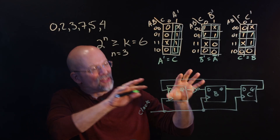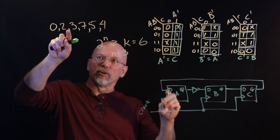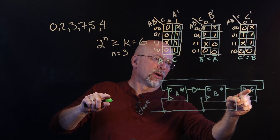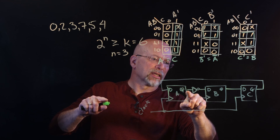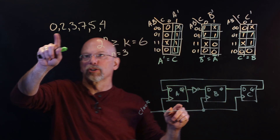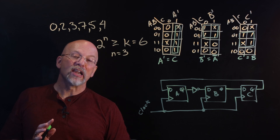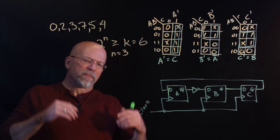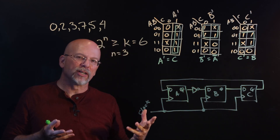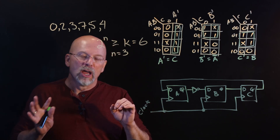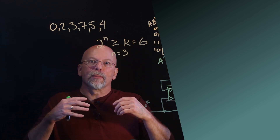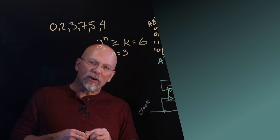Every clock pulse moves us to the next value in the sequence. Starting from 000: A gets 0, B gets the inverse of 0 which is 1, and C gets B which is 0 — so we transition from 000 to 010, which is decimal 2, exactly as required. In our next video we'll go back to linear feedback shift registers, looking at a shift register where the last bit gives a binary sequence — used for test sequences, error sequences, and pseudo-random number generators, all very important in computing.